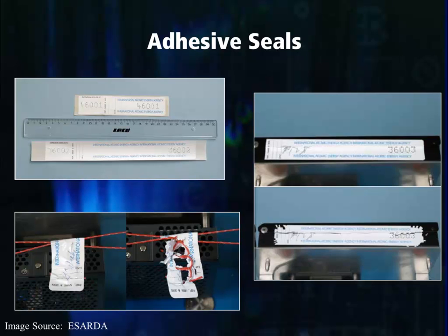Several seals are in operational use by the IAEA, including the adhesive seals you see here. These are intended for short-term applications not to exceed 24 hours. The seal is manufactured in slip sheets and uses a pressure sensitive adhesive, which makes the seal particularly easy to use. Their main advantages include ease of use and low cost. The main applications for adhesive seals are to secure wire wraps and interface closures. They are intended primarily for use on metal and plastic surfaces and are available in two sizes. The IAEA uses about 15,000 of these adhesive seals each year.